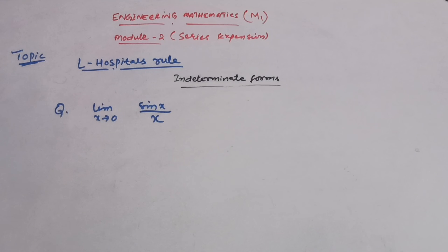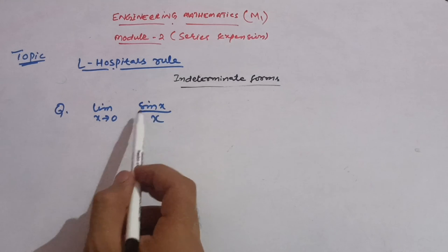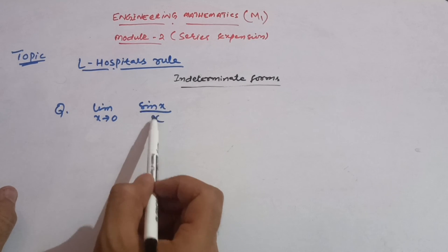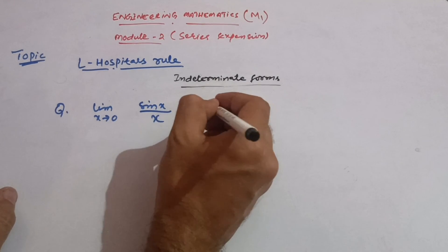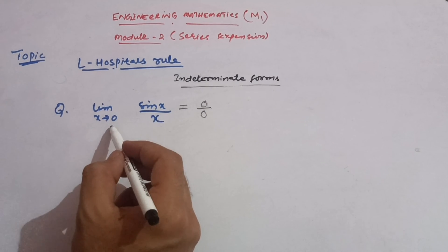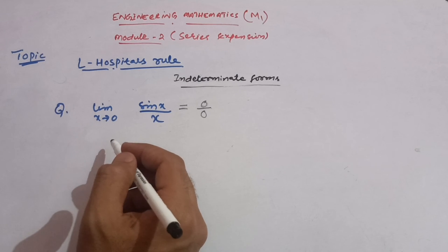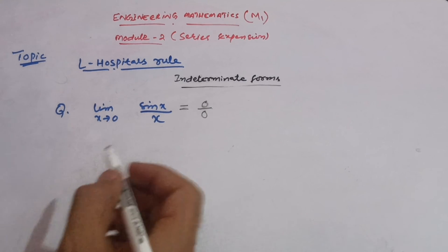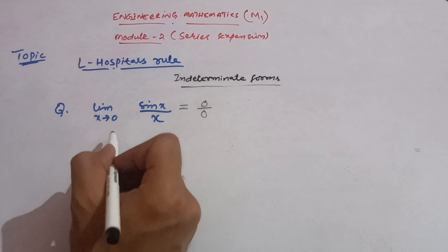Let us solve an example. The problem is: limit x tends to zero of sin(x)/x. If you simply put x = 0, you get sin(0)/0, which is 0/0 — that is an indeterminate form. So we need to apply L'Hôpital's rule here.